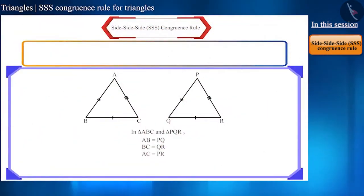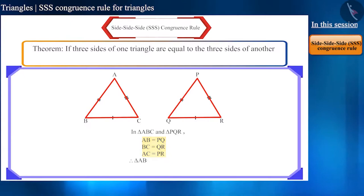We can write this conclusion in the form of a theorem. If three sides of one triangle are equal to the three sides of another triangle, then the two triangles are congruent.